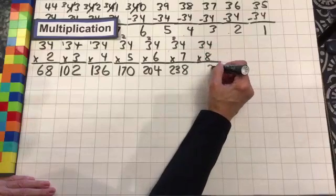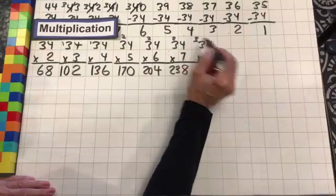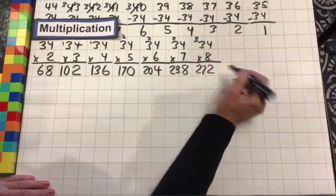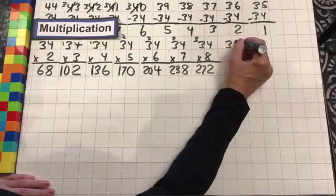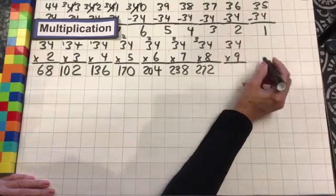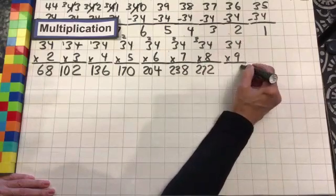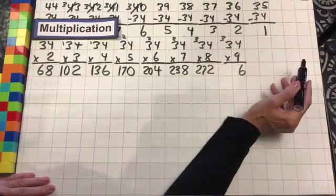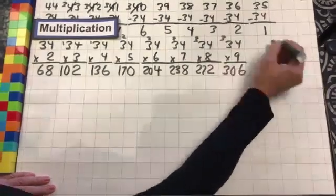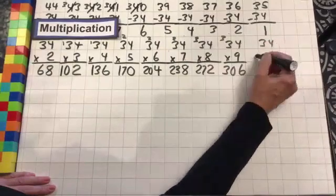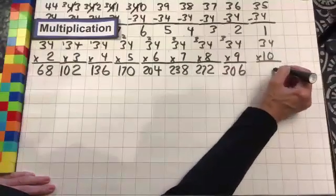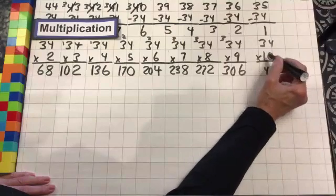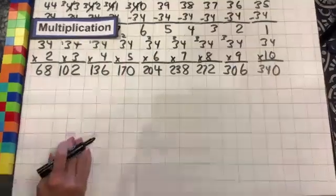34 times 8: 8 times 4 is 32 — drop the 2, carry the 3; 8 times 3 is 24, plus 3 is 27. 34 times 9: 9 times 4 is 36 — drop the 6, carry the 3; 9 times 3 is 27, plus 3 is 30. 34 times 10: we're going to drop that 0 to hold that place value, then 1 times 4 is 4; 1 times 3 is 3. And we're done with our multiplication.